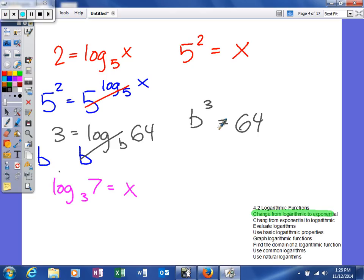Let's look at the last one. In the last one, our base, as you can see, is 3. We're going to exponentiate with the base of 3. The reason we do that is that's the inverse operation. On this side of our equation, those will cancel and leave me 7 is equal to 3 to some power.